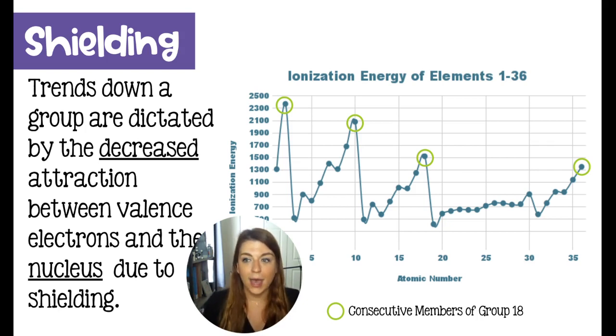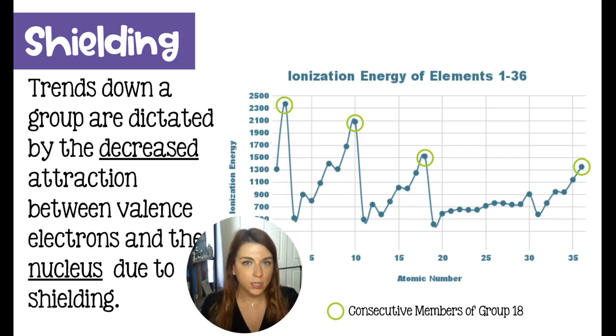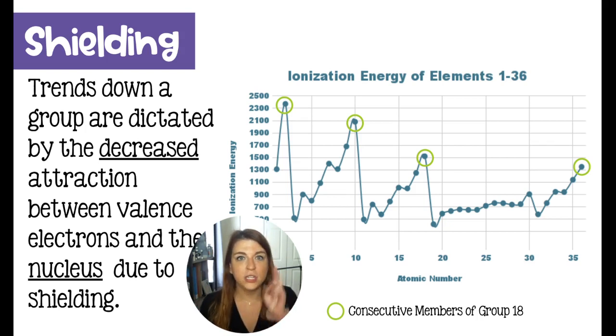When there is decreased attraction between outer or valence electrons and the nucleus, we have all of our periodic table trends. Specifically, the three trends that talk about electrons are ionization energy, electronegativity, and metallic character.